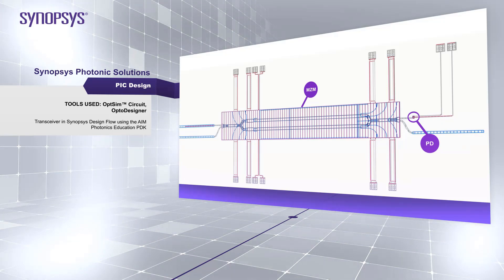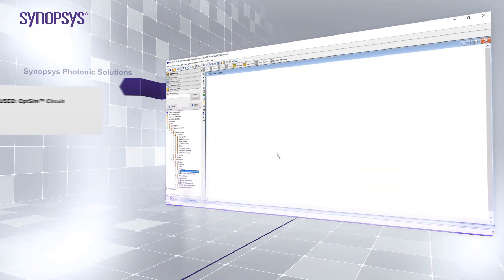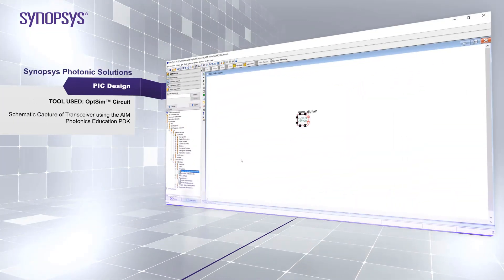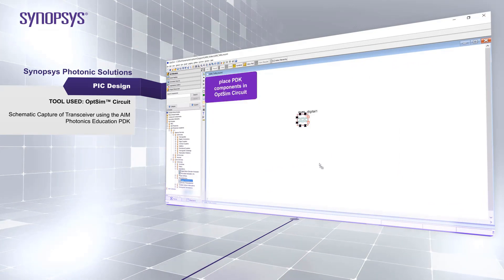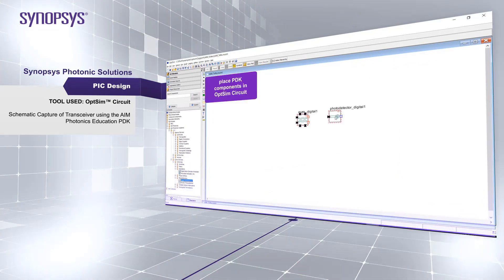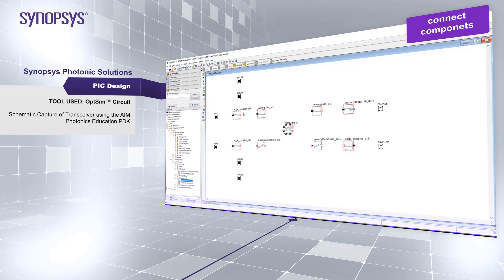Using OpSIM Circuit's intuitive graphical user interface, drag and drop components from the AIM Education PDK to create your transceiver, adding elements such as the MZM and photodetector, as well as edge couplers and waveguide routing. Connect the components to produce a complete schematic for simulation.